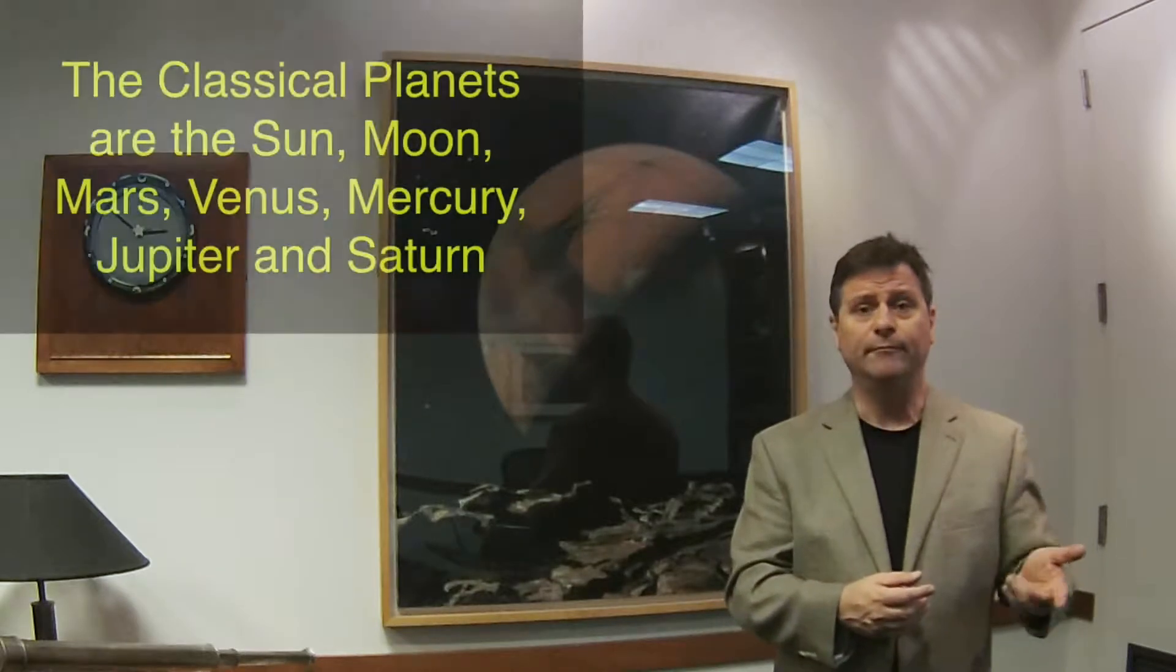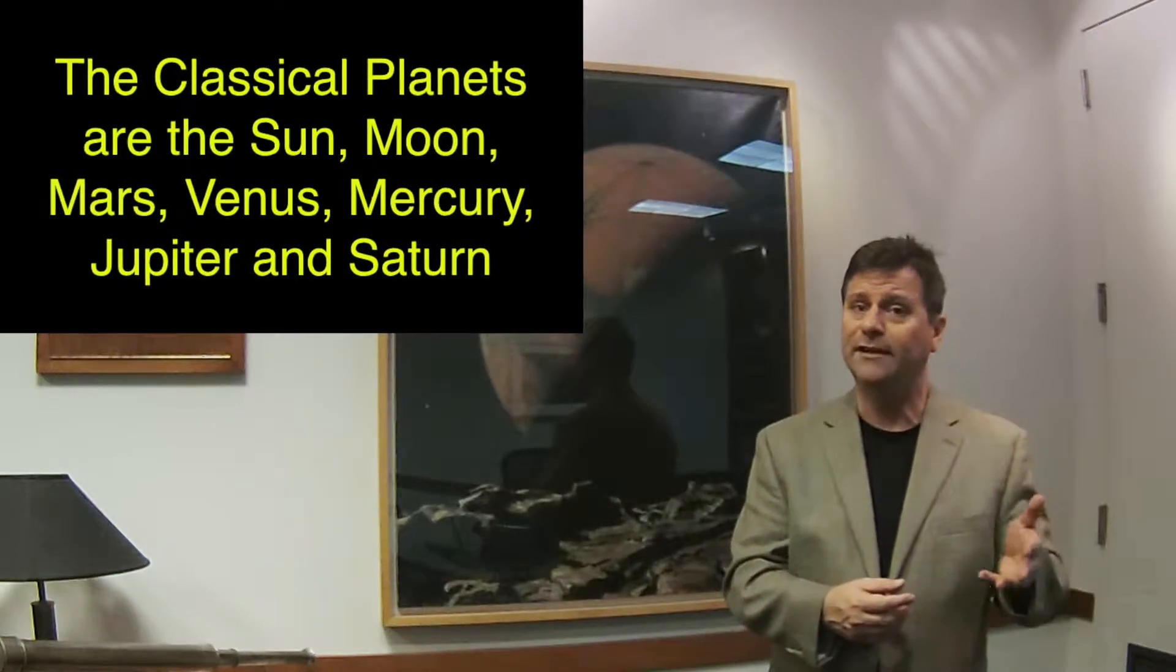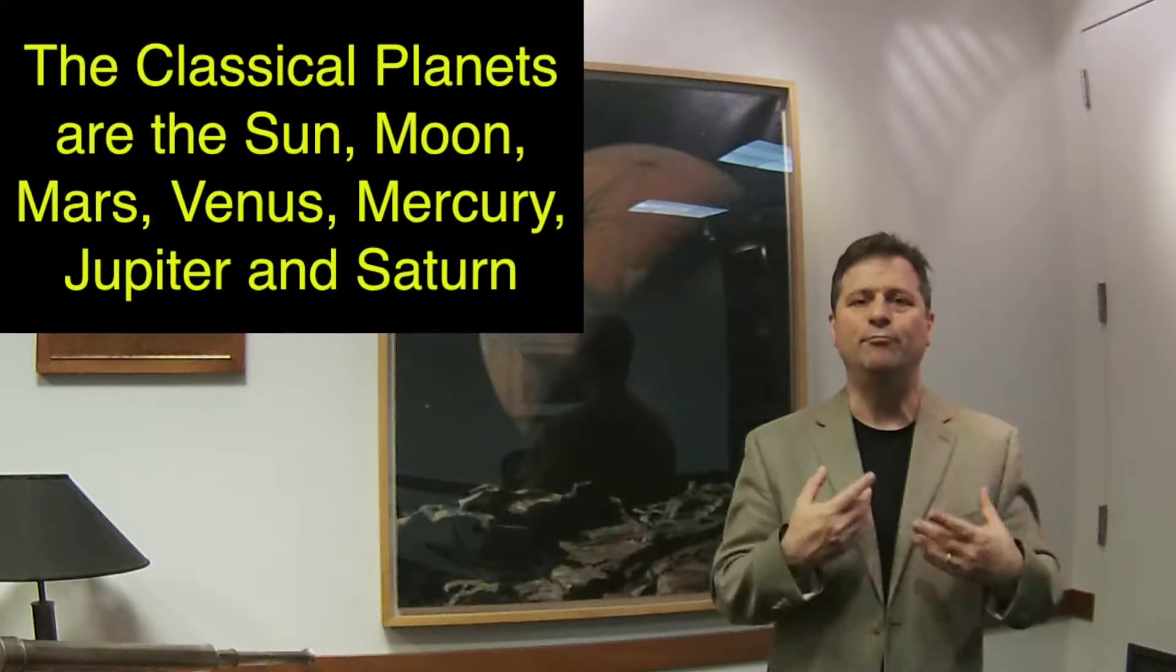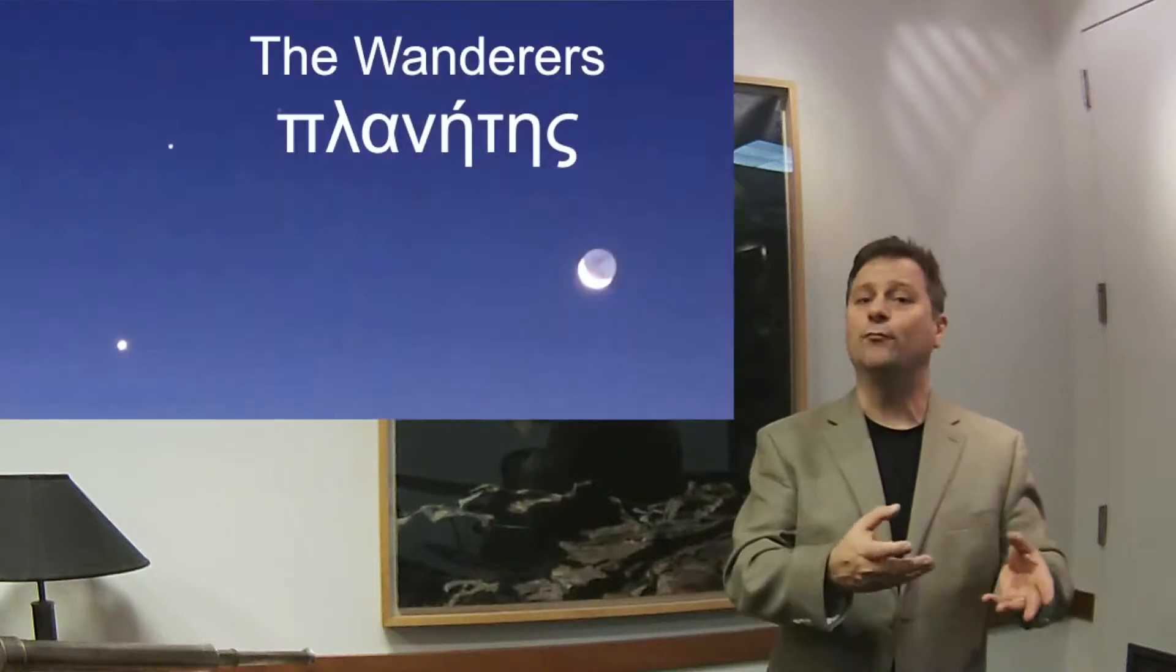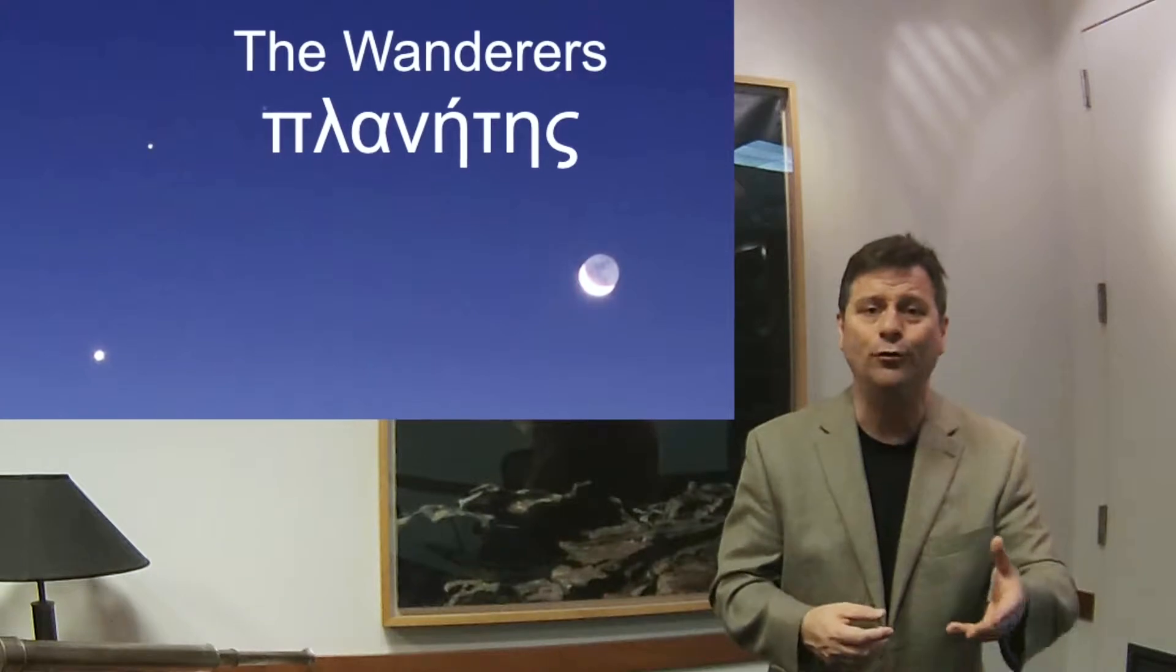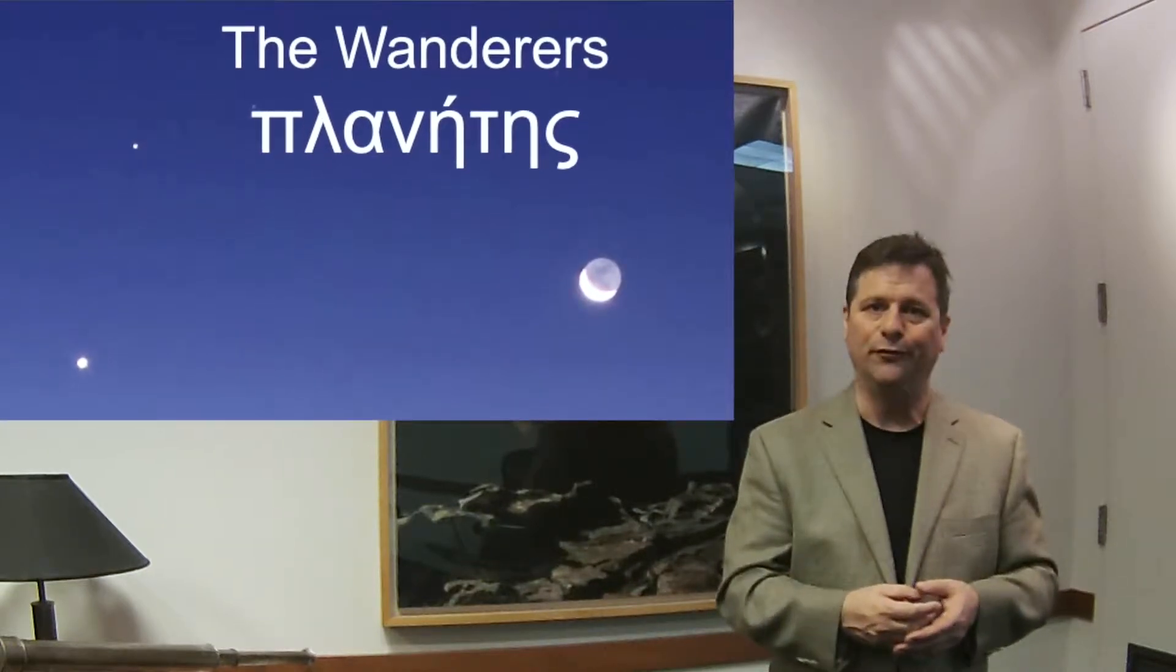In the classical terms of the wandering stars, we have the sun, the moon, Mars, Mercury, Venus, Jupiter, and Saturn. So those are the classical planetas, the planets. And planets in Greek indicates wanderers, which means wandering stars. So the word planet, the oldest meaning for that word is wanderers, wandering stars.